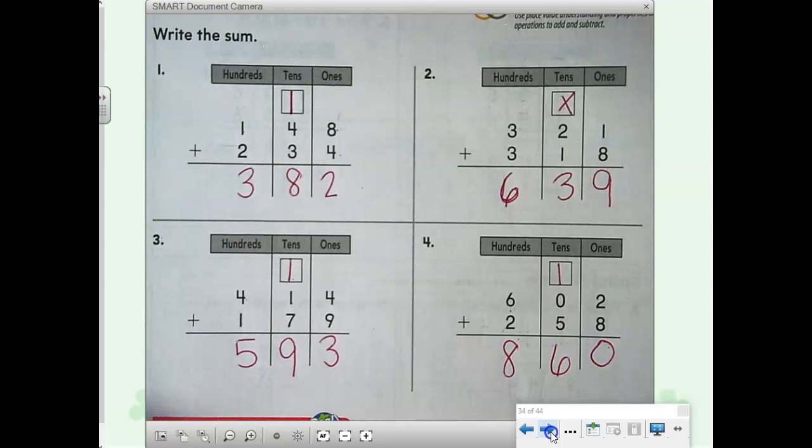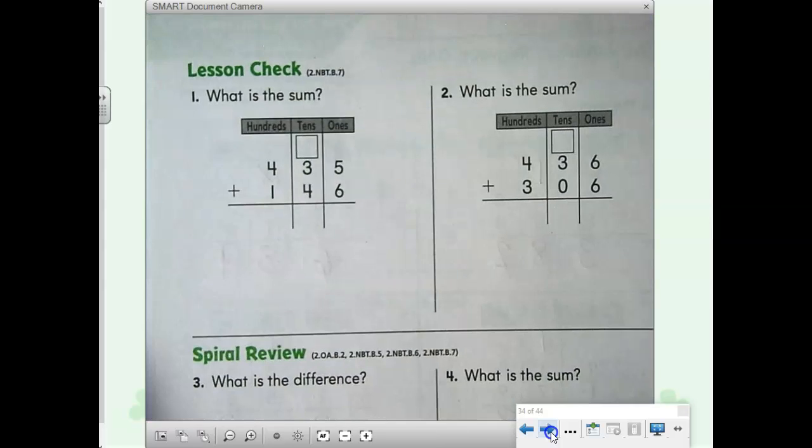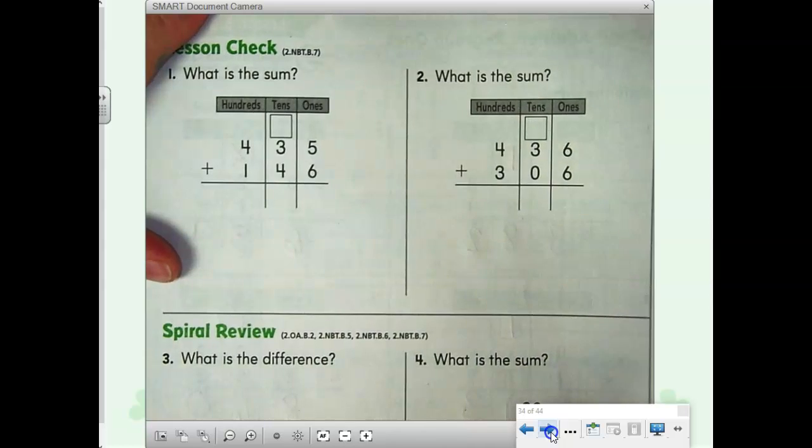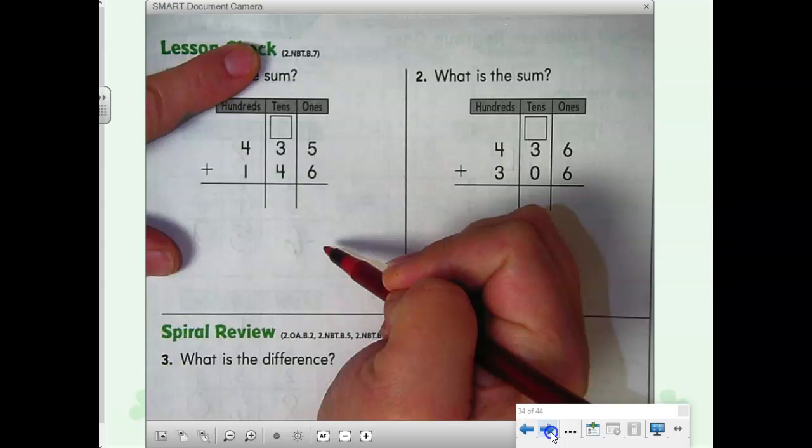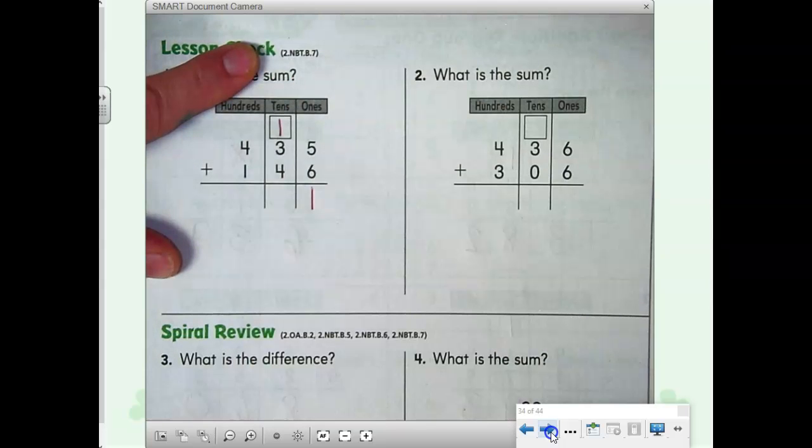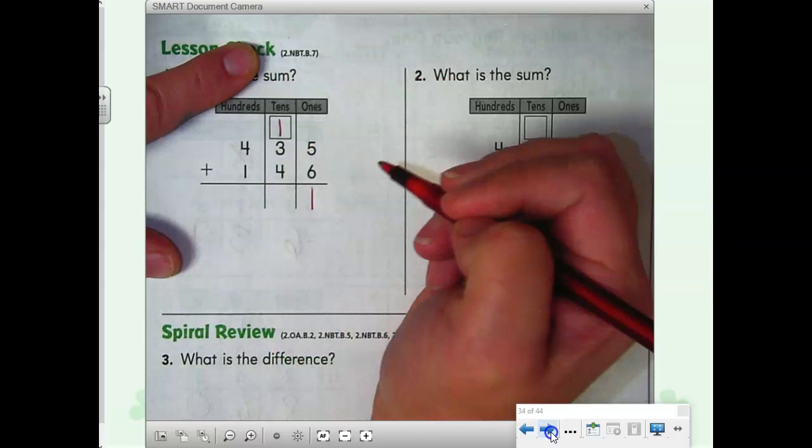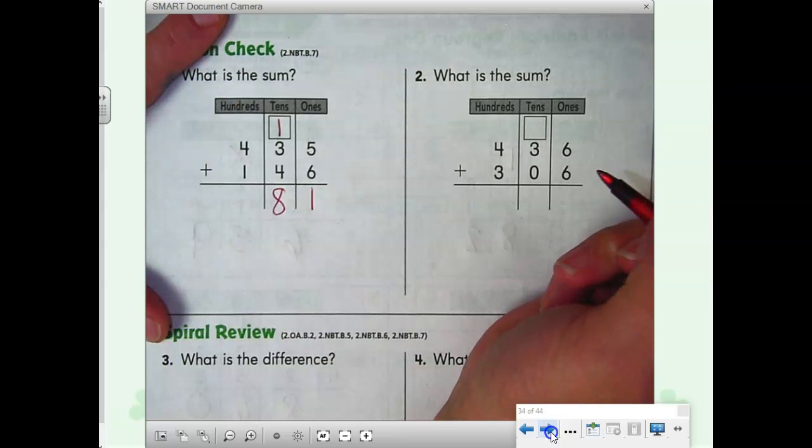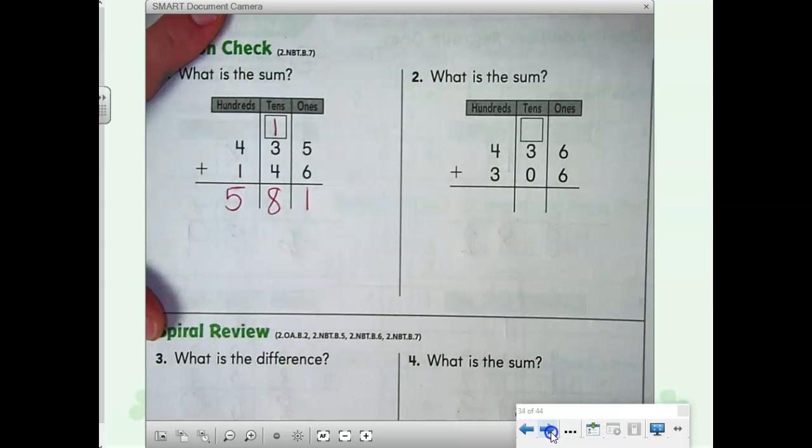When you're ready, you can turn it over. We're ready to do the review on the back now. Number 1, let's do it together. 435 plus 146. 5 plus 6, guys, 11. 11 is 1 ten and 1 one. 1 plus 3 equals what? 4. 4 plus 4? 8. Write your 8 in the tens column. Now, let's add your hundreds. 4 plus 1 equals what? 5. So, what's your answer? 581.